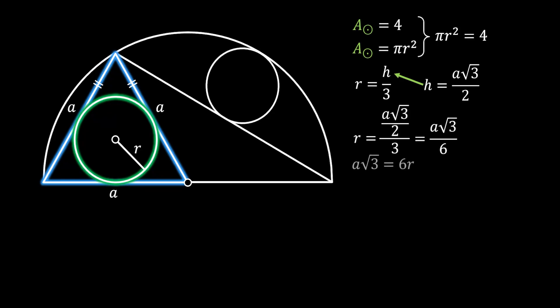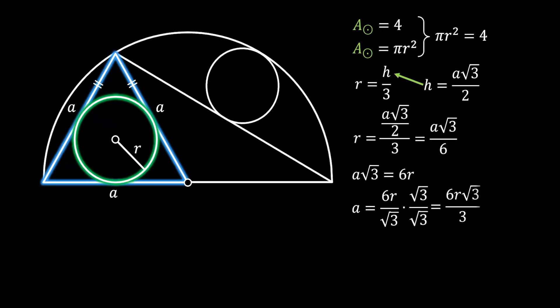We can rearrange this to get that the side a is equal to 6r over √3. Rationalizing this, and simplifying 6 and 3, we get that the side of our equilateral triangle is 2r√3. We are going to substitute this value in for a. Remember, this also represents the radius of our half circle.